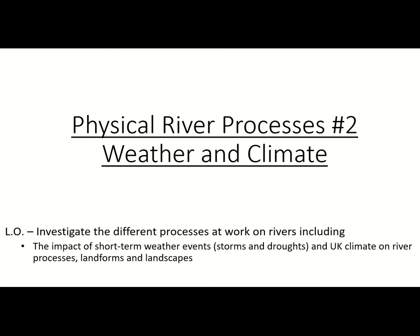This session is very much a me talking and you writing kind of session - we call it chalk and talk in teaching terms. There's not a great deal of emphasis in the exam from this particular section so far, but that's not to say you can ignore it completely, because little bits and snippets of it are very much relevant. We're going to look at how short-term weather events - basically storms and droughts - can affect river processes, landforms, and landscapes. I've also got some geography exam skills practice woven in, so it's not completely wasted time.